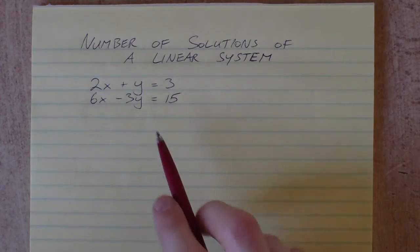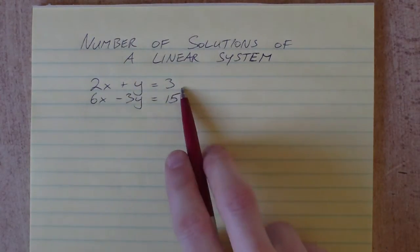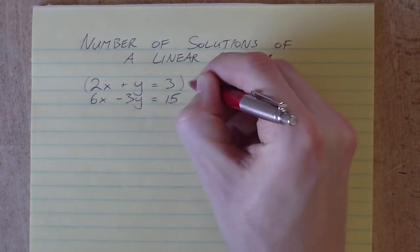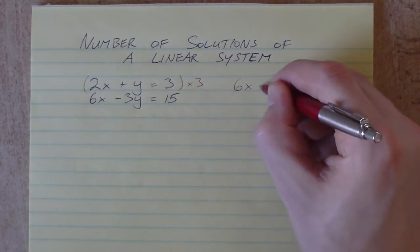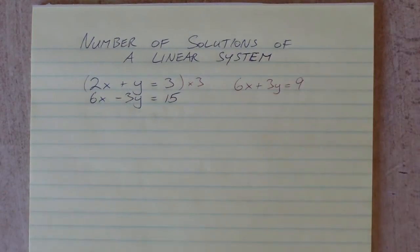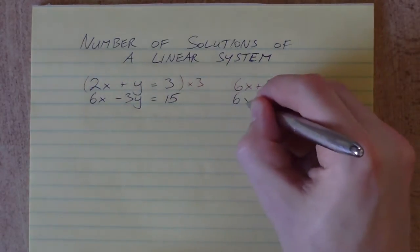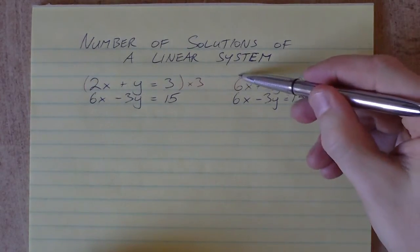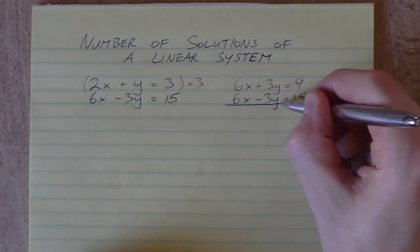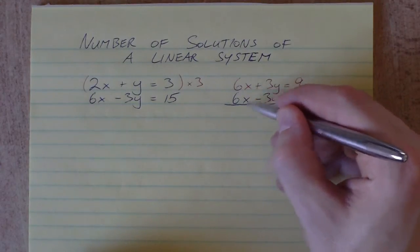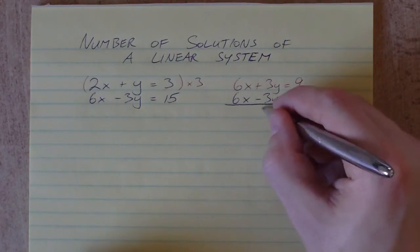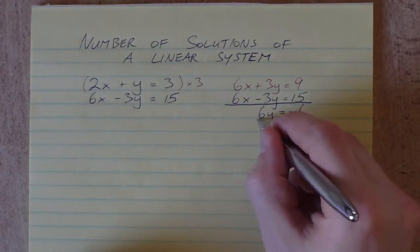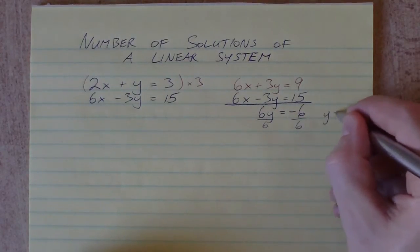I'm going to take my first equation and multiply it by 3 to get the coefficients of x to be the same. So I'll get 6x plus 3y equals 9 and the bottom equation stays the same at 6x minus 3y equals 15. If we subtract these equations, 6x minus 6x gives 0, and 3y minus negative 3y gives 6y equals 9 minus 15, which is negative 6. Divide both sides by 6 and we get y equals negative 1.